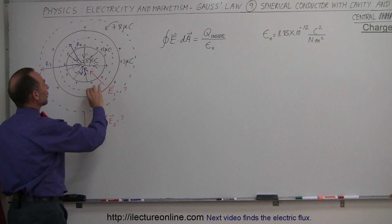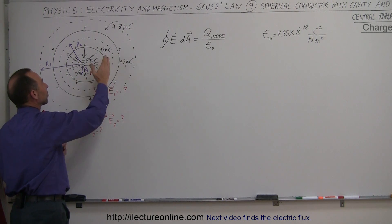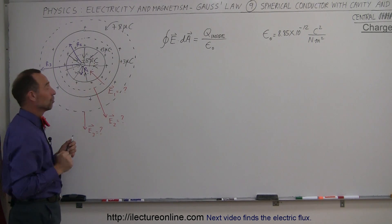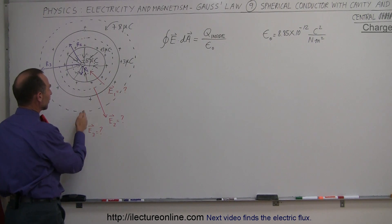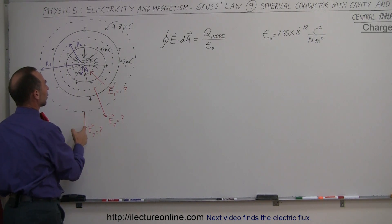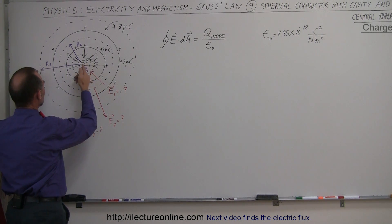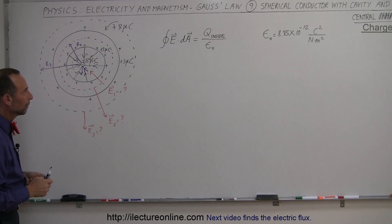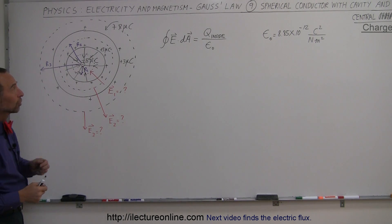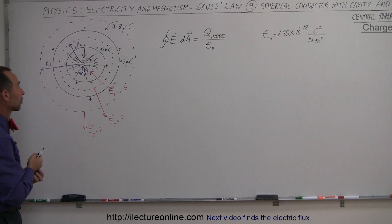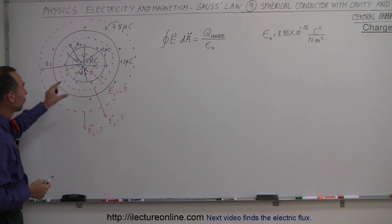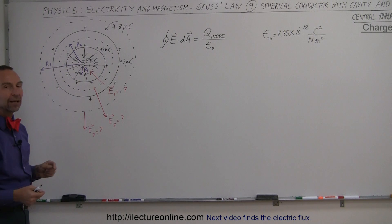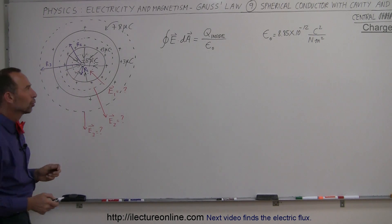Now, what will be the electric field inside the conductor between the inside and outside surface? And also, what will be the electric field outside the conductor — say, at a distance R3 away from the center? Let's use Gauss's law to find all three electric fields. First, we're going to find the electric field inside the cavity around the negative 5 microcoulomb charge.